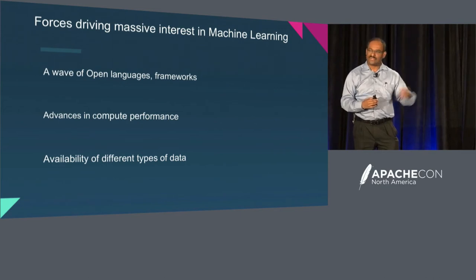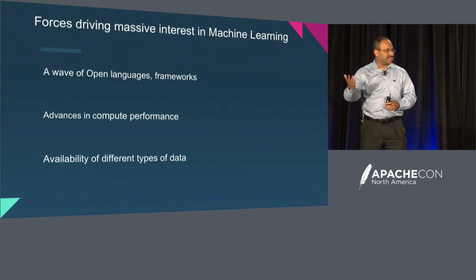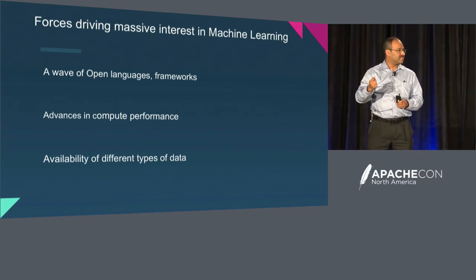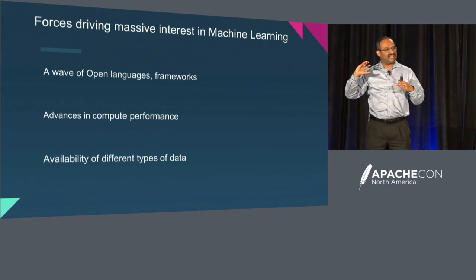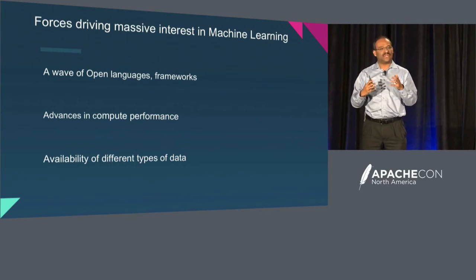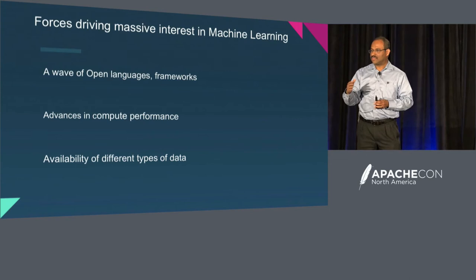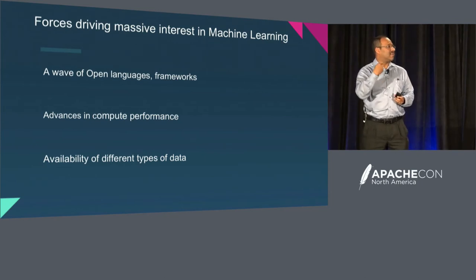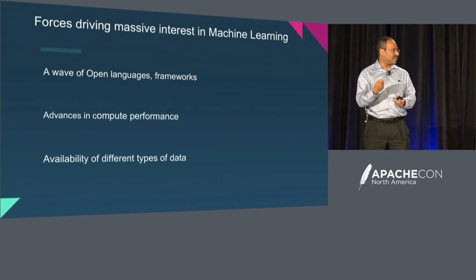Social media — Twitter, Facebook, et cetera — blogs, whatever your customer has put out there in the social sphere: these things become additional data that can be brought in to enhance your model. Now, external data may not always enrich your model. It is typically a data scientist's job to see if adding external data enriches your model and improves the accuracy or performance of the model.